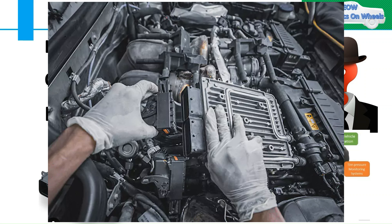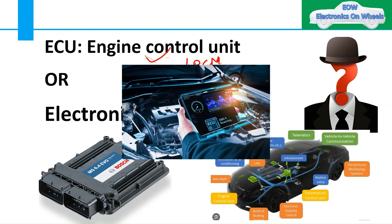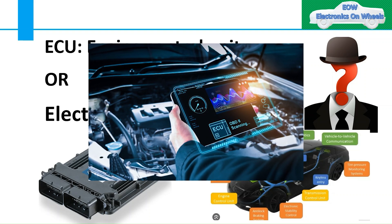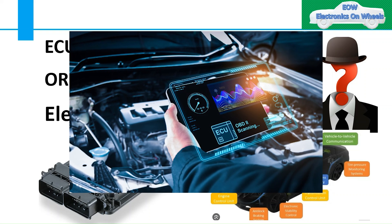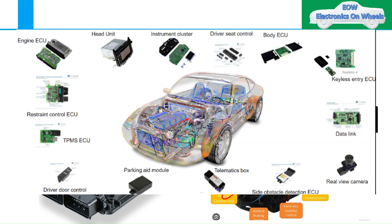ECU is a name given to a device that controls one or more electrical systems in a vehicle. It is like a computer or the brain of the system. ECU basically provides instructions to various electrical systems and outputs to operate actuators. There are many types: airbag control unit, anti-theft, engine control unit, body control module, telematics, door control modules — all of these are ECUs, electronic control units.